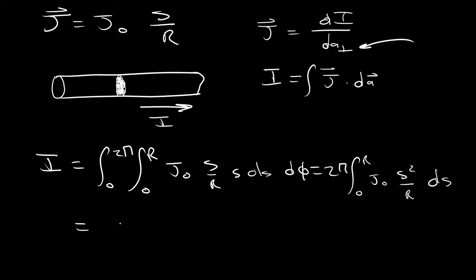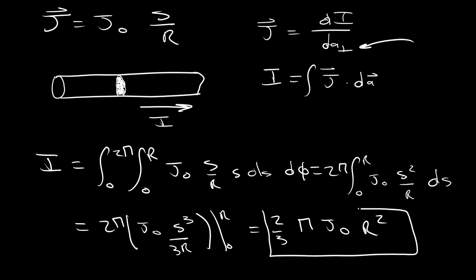Now when we integrate all that out, we're going to get 2π J₀ S cubed per 3R, and evaluate that on bounds 0 to R. And when we do that, we're going to get 2/3 π J₀ R squared. And so this right here is going to be our total current. And so that's really nice. We figured out our total current. That's fantastic.